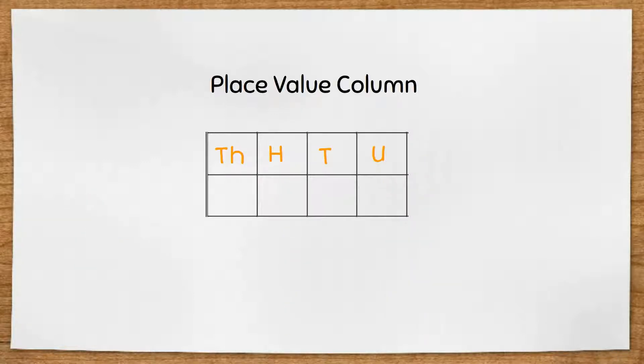We're going to use a place value column to help us read and write numbers correctly. We place each digit in any number under the correct column.